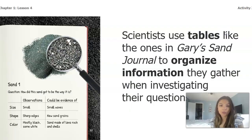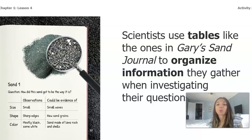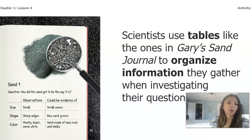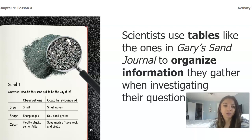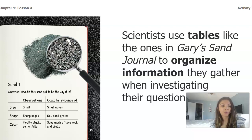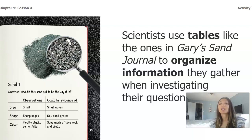Scientists use tables like the ones in Gary's Sand Journal to organize information they gather when investigating their questions. In the book, when Gary was looking at his sand, he would first make observations. For example, looking at the picture of that sand, he notices that it's small, it has sharp edges, and it is mostly black with some white. He's just writing down the things that he observes or can see.